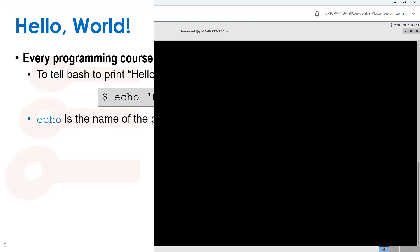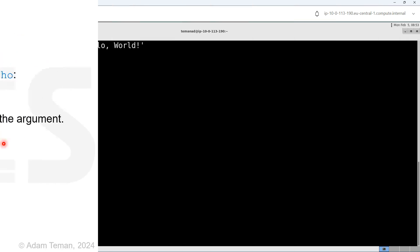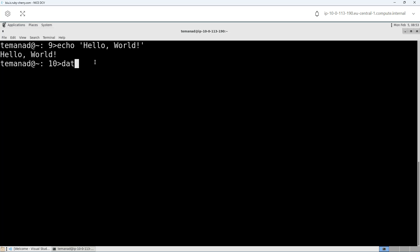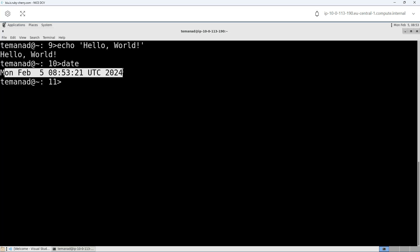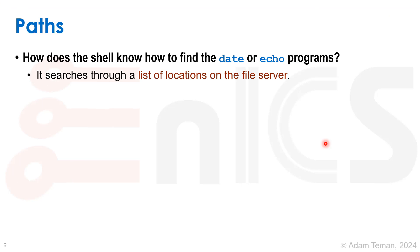We can try other programs. For example, date — what do you think date is going to do? If I write date, what I get is the date and time of when I recorded this.